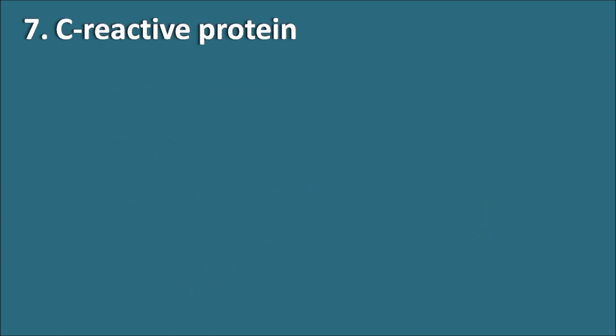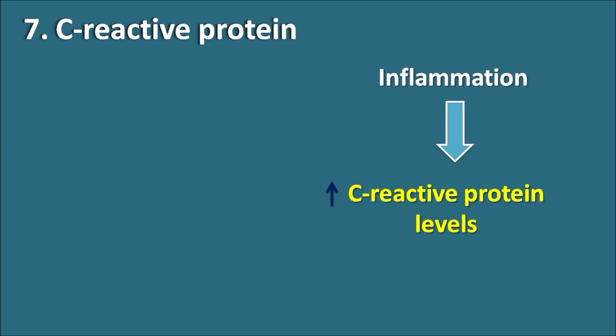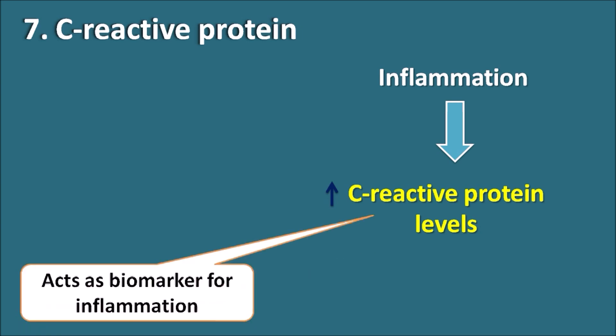The seventh risk factor is C-reactive protein. When there is inflammation in the body, C-reactive protein levels increase, which is why it acts as a biomarker for inflammation. In the case of atherosclerosis, C-reactive protein levels may be elevated. However, this risk factor cannot confirm that elevated C-reactive protein levels will definitely lead to atherosclerosis; the relationship is not fully established, though elevated levels may increase atheroma generation.